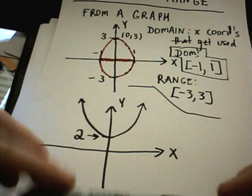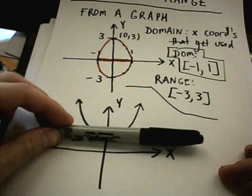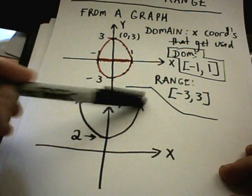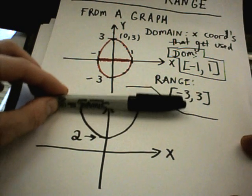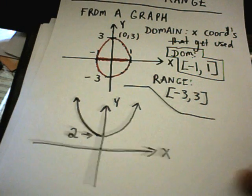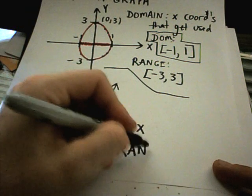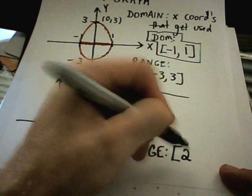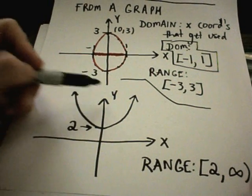If I do this same thing to get the range — I'm not hitting it, not hitting it, not hitting it — the first y-coordinate I'm going to get is positive 2. But if the graph keeps going up, I'm going to keep getting y-coordinates forever and ever. So the smallest y-coordinate I hit is positive 2, and it's going to keep going off to infinity.